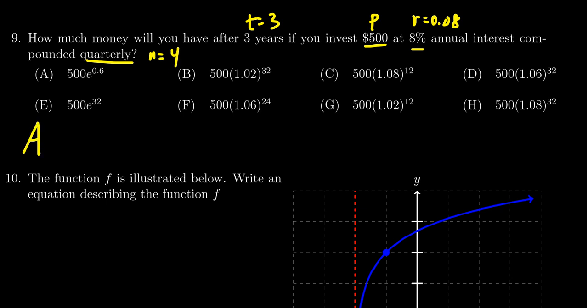So using our standard formula, the amount is going to be P times one plus R over n to the n times T. So we have all this information here.